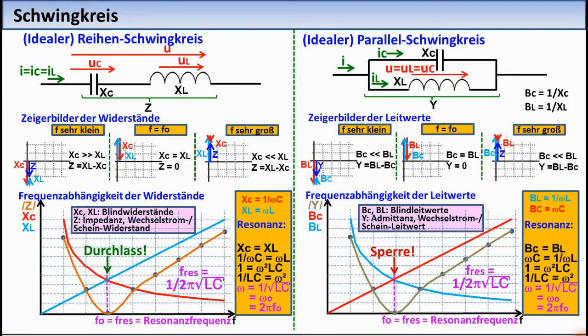A series resonant circuit has a DC resistance of infinity because the capacitor does not allow DC current to pass. A parallel resonant circuit has a DC resistance of zero because the coil represents a short circuit for DC current. With increasing frequency F or omega, the resistance of the coil increases linearly according to the formula, while the resistance of the capacitor decreases according to the formula. The curve shape is a hyperbola. This behavior is shown by these diagrams.